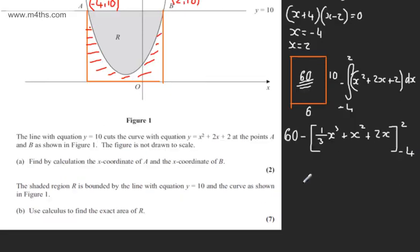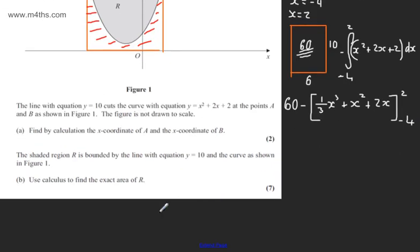So all I'm going to do is write down here now that this is going to be 60. We're going to be subtracting away from the 60 one third of 2 cubed, so we've got one third of 8. We're now going to add 2 squared which will be plus 4, and we're going to add plus 2x which is going to be another 4.